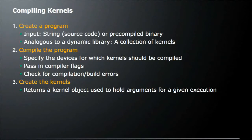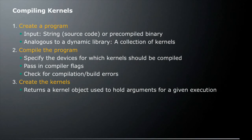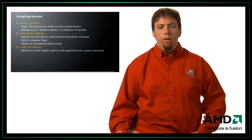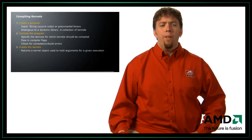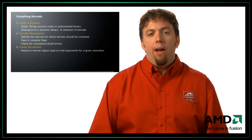Let's look at how we can compile kernels. First, we create a program. The input is going to be a string — source code or a pre-compiled binary loaded from disk. You can think of this as a dynamic library; it's a collection of kernels. We have multiple functions we can call into this program object. For example, if we're doing image processing, we might have kernels that scale, rotate, or transpose an image. Once we've created the program object from a binary or source, we compile it, specifying the devices for which the kernel should be compiled.